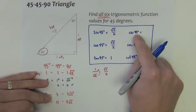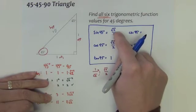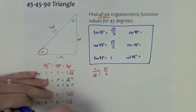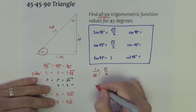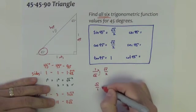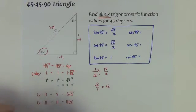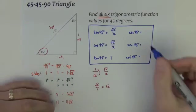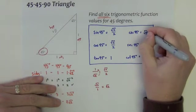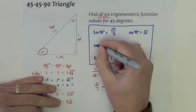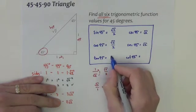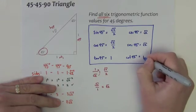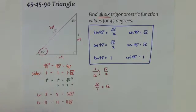Now, the cosecant is the reciprocal of sine. Now, you could reciprocal this fraction, or we could reciprocal the fraction down here before we rationalized. Square root of 2 over 1 is just square root of 2. That's the cosecant of 45. Now, since cosine is the same as sine, secant is the same as cosecant, it's also square root of 2. And cotangent is the reciprocal of 1, which is still 1. Those are your six trig function values for 45 degrees.